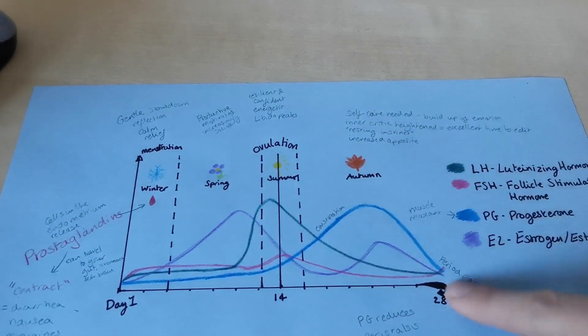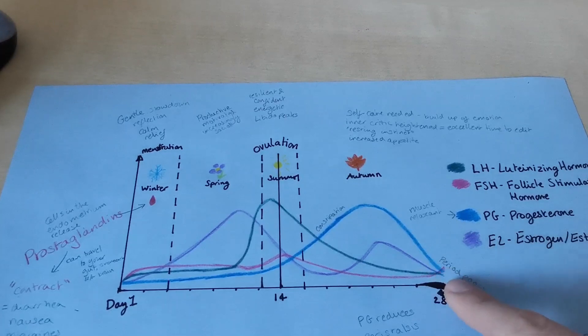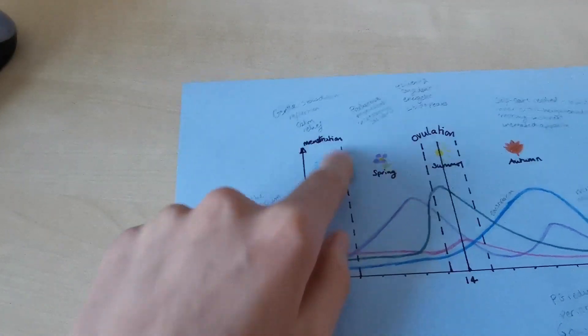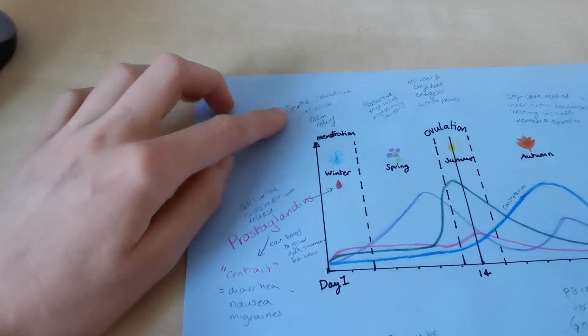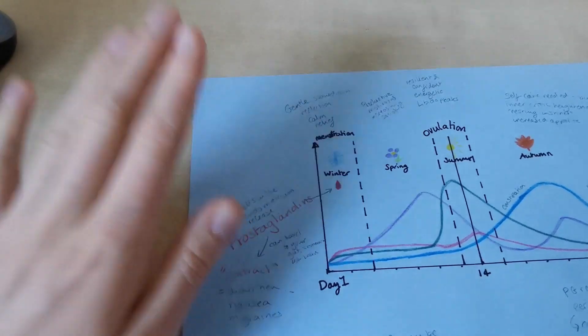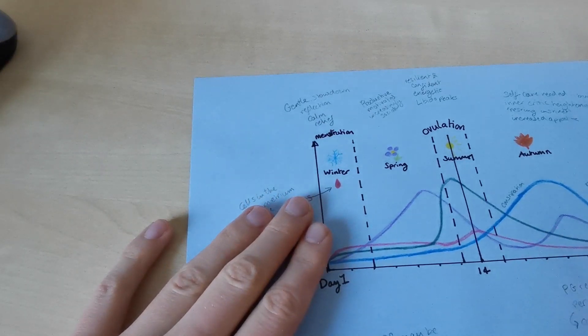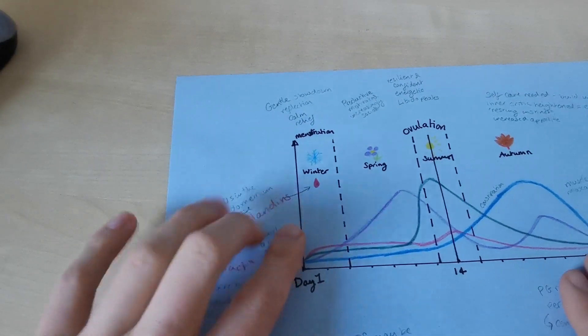So then your progesterone drops. Everything kind of drops and you have your winter. So that's when you'll have menstruation. And that's a really beautiful time to just be gentle and slow down to reflect. And you can have a sense of relief from the build up of emotions you will have in your autumn.